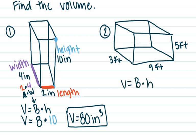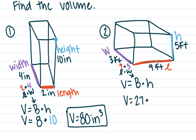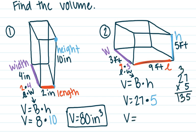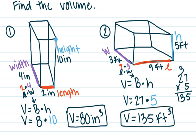Let's do another one. Write your formula. Remember big B is length times width. Label your picture: here is height H, here is length L, and here is width, which is 3. Big B equals length 9 times width 3, which is 27. Then multiply big B times H: 27 times 5 equals 135. Volume is 135 cubic feet — feet to the third power.